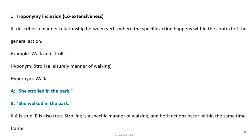Troponymy inclusion describes a manner relationship between verbs where a specific action happens within the context of a general action. For example, 'walk' and 'stroll' — 'stroll' is a leisurely manner of walking. 'Walk' is the hypernym (generalized concept) and 'stroll' is the hyponym (specialization). 'She strolled in the park' implies 'she walked in the park' — if the specific action is true, the general action is also true. Strolling is a specific manner of walking, and both actions occur within the same frame.